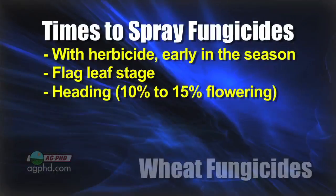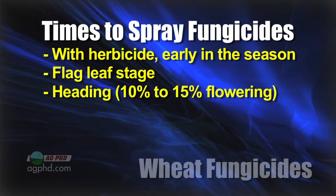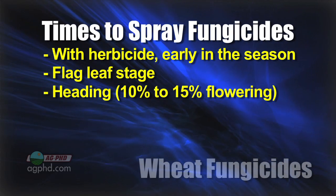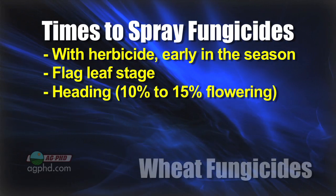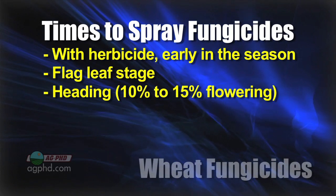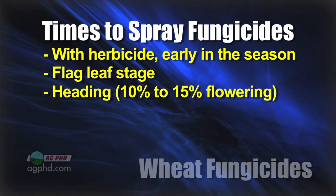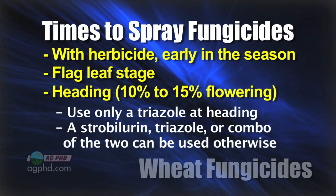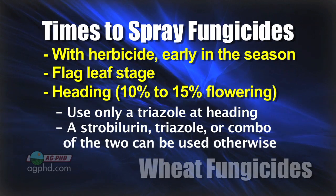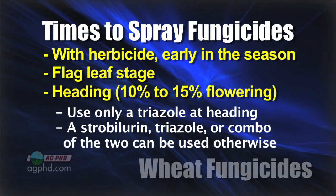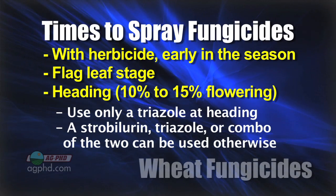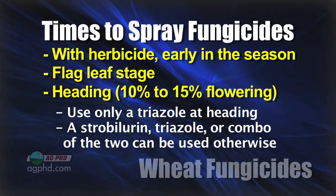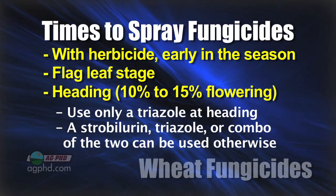That's another reason why spraying just one time isn't going to cut it in a lot of cases. The three main timings for wheat when spraying fungicides are: with herbicide early in the season, at flag leaf, and then at heading — or at about 10 to 15 percent flowering. At that flowering stage you have to use a triazole; you can't use a strobilurin, or you're much more likely to have DON problems. At the other timings — flag leaf or with herbicide — you can use a strobilurin, a triazole, or a combination of the two.